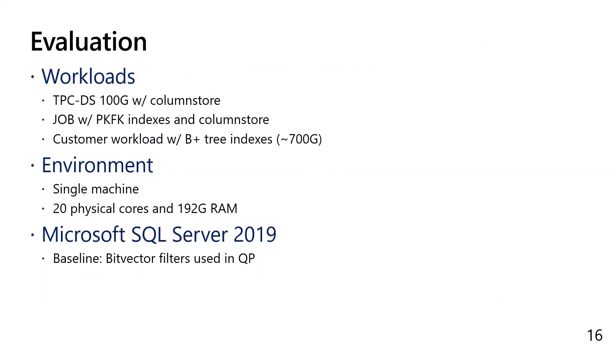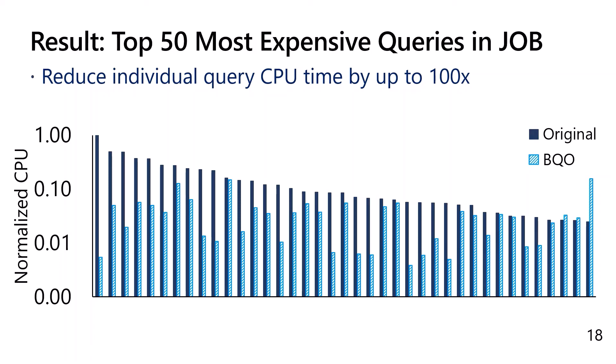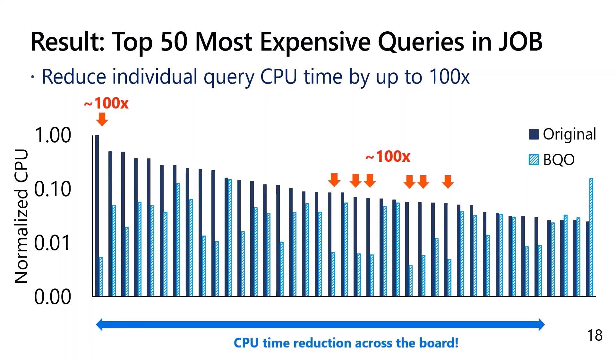We evaluate our prototype with three workloads. Our baseline is the original Microsoft SQL Server 2019 where bitvector filters are used in query processing. The y-axis shows the ratio of workload-level CPU of our approach compared with that of the baseline. We have observed 22% to 60% reduction in workload-level CPU time. We have seen the most performance improvement in the JLB benchmark because its queries have the most complex join graphs on average. Zooming into individual query CPU time for the top 15 most expensive JLB queries, we see significant CPU reduction across the board, with several queries achieving two orders of magnitude CPU time reduction.